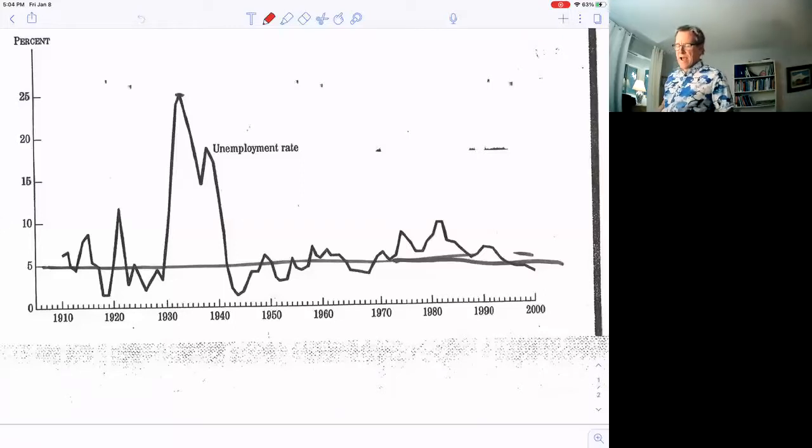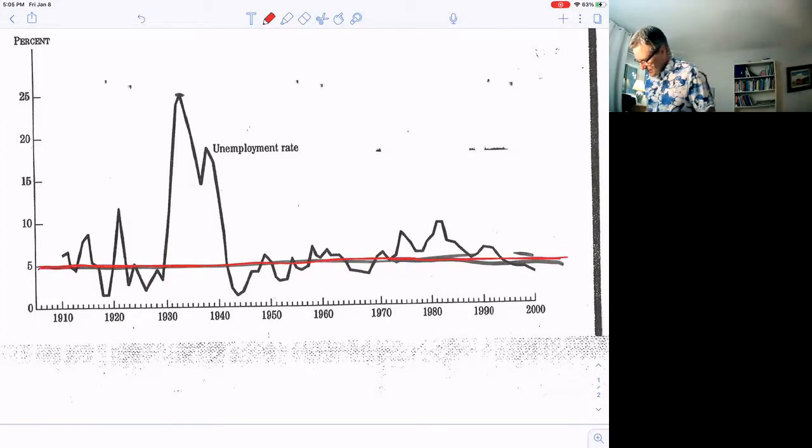Now I'm going to show you a graph of unemployment going back to about 1900. This only goes up to about 2000. And this black line here is at five percent. About the middle range of what people think is full employment. So you can look at this graph too and try to figure out what is full employment.